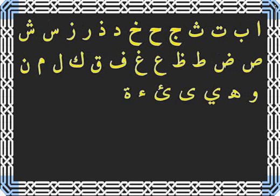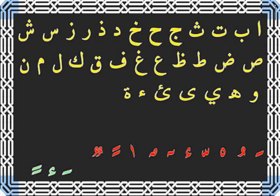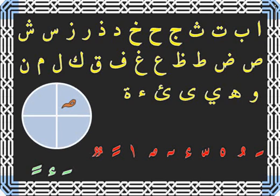It supports all Arabic letters and Harkat al-Tashkiel including Hamzat al-Wassl, al-Alaf al-Khanjariya, and tanwain al-Bam, in both shapes, which are not supported by other Arabic writing programs.